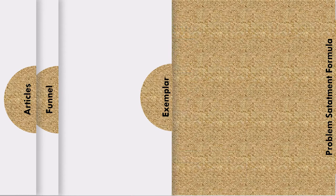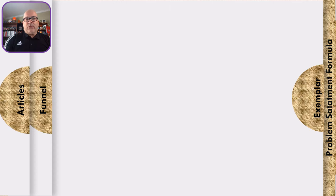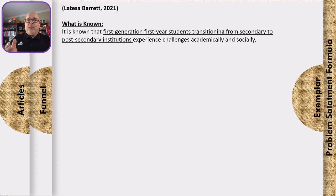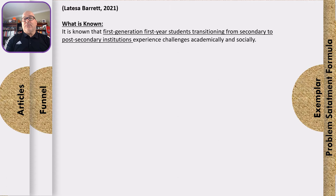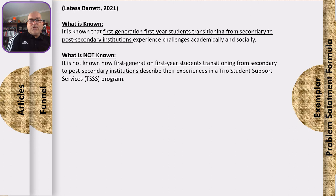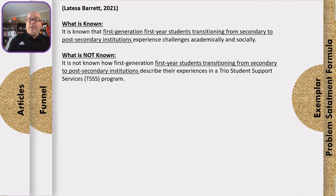Let's apply that formula to a real-world example of a student I worked with just last week — Latissa Barrett. The first thing we established, supported by several articles, was what is known: that first-generation, first-year students transitioning from secondary to post-secondary institutions experienced challenges academically and socially. Notice that the 'who' in this study is underlined — it's important because we maintain that consistency throughout.